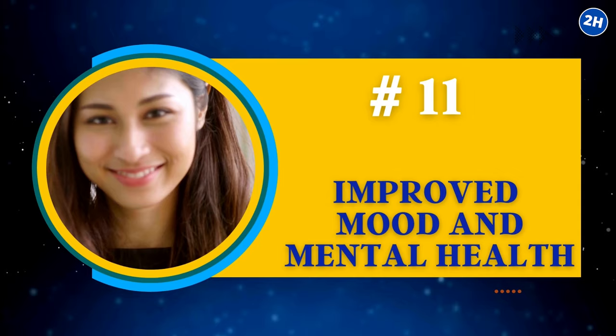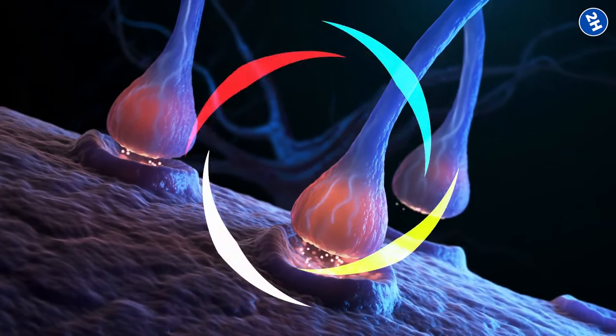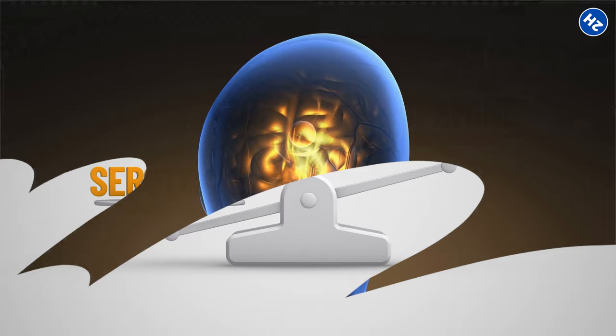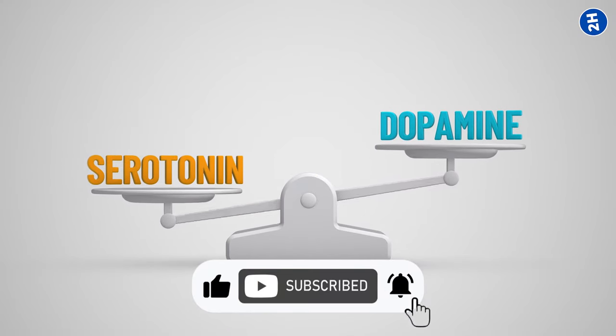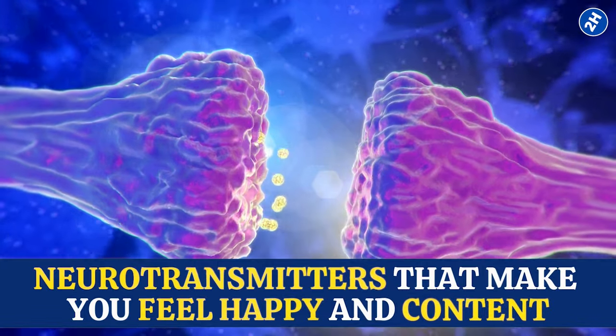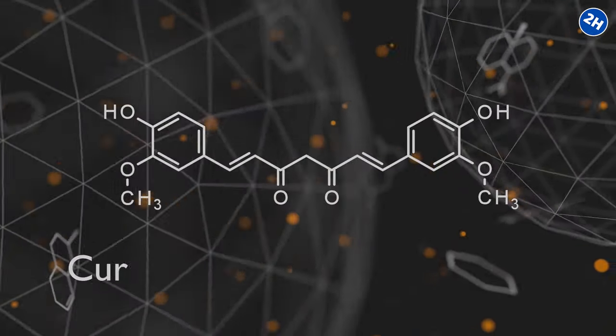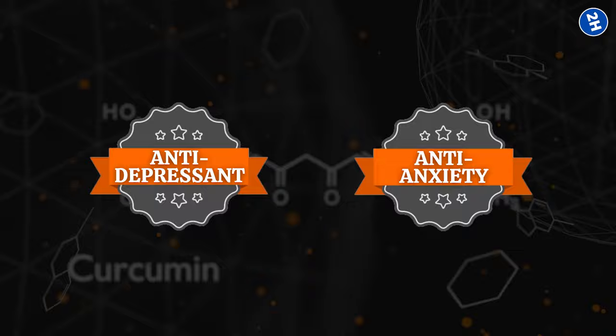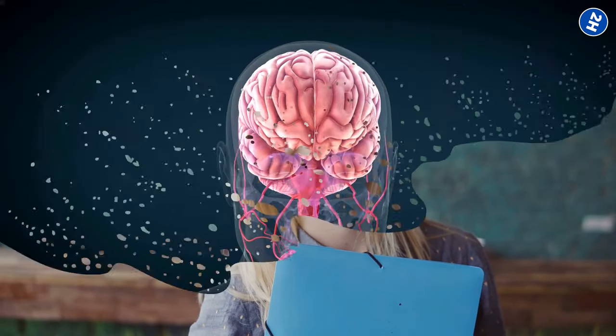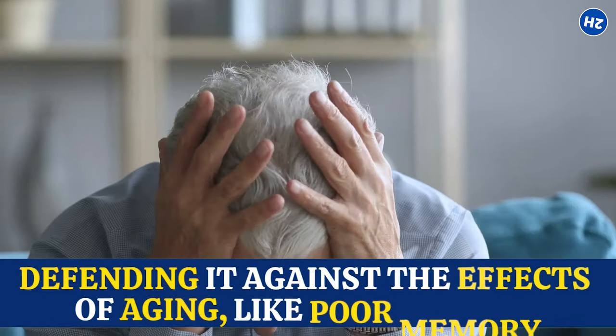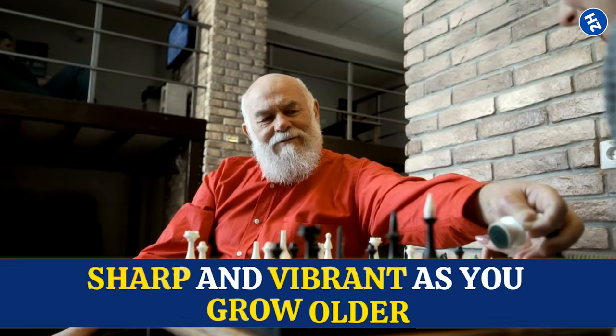Number 11. Improved Mood and Mental Health. Your brain has these cool chemicals called neurotransmitters that help send messages and keep your mood in check. Sometimes things get a bit off balance, and that's where curcumin comes to the rescue. Curcumin is like a chill pill for your brain. It helps boost the levels of serotonin and dopamine, two important neurotransmitters that make you feel happy and content. It's like turning on the sunshine in your brain on a gloomy day. Studies have found that curcumin can have antidepressant and anti-anxiety effects, giving you a mental boost when you need it. Also, curcumin has been shown to support brain health in the long run, defending it against the effects of aging, like poor memory, and keeping it sharp and vibrant as you grow older.